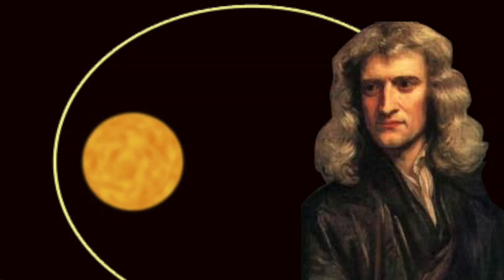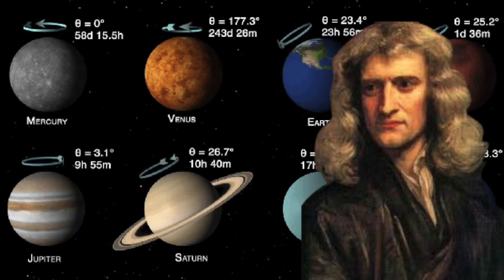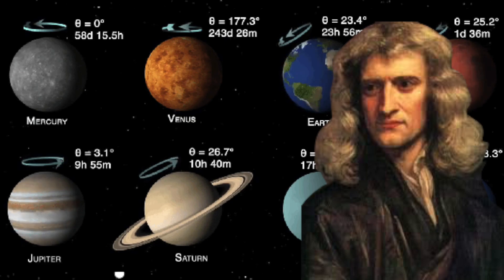Newton says one second on Earth is the same as one second on the Sun, is the same as one second on Jupiter, is the same as one second anywhere in space. But Einstein says no, that's not true.